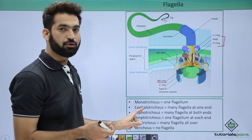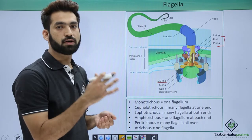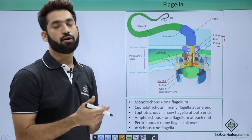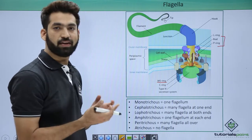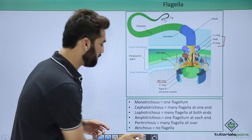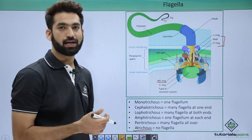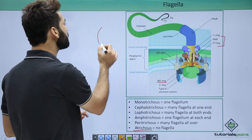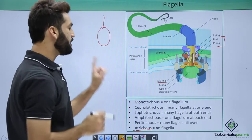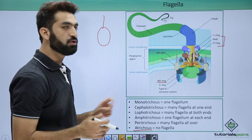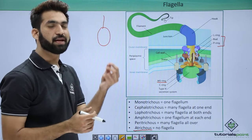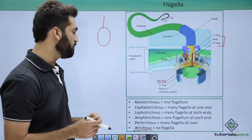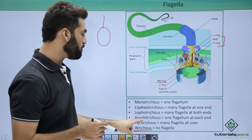There are different types of bacteria based on the presence, absence, or number of flagella. When there are no flagella, the bacteria is called atrichous. When a bacterium has one flagellum at one end, it is called monotrichous — 'mono' meaning one flagellum at one end.